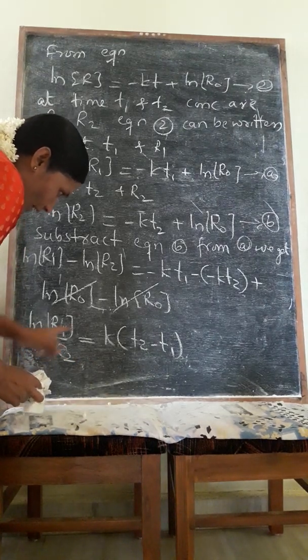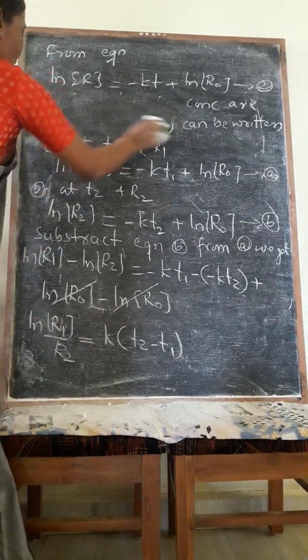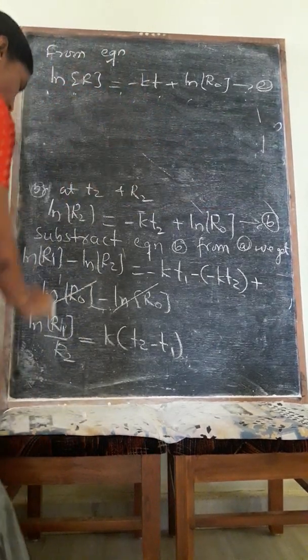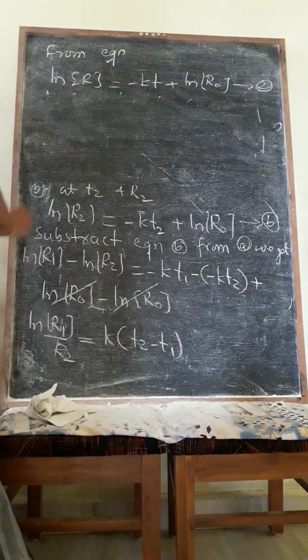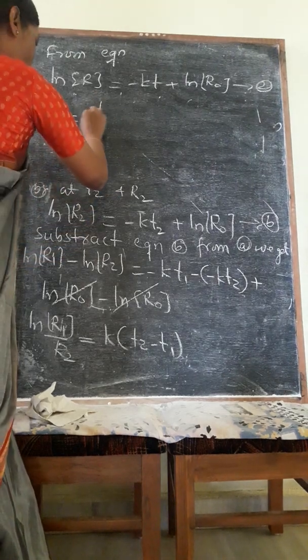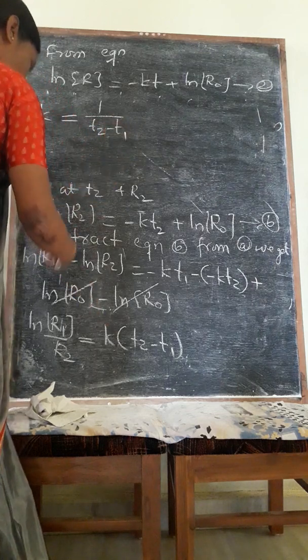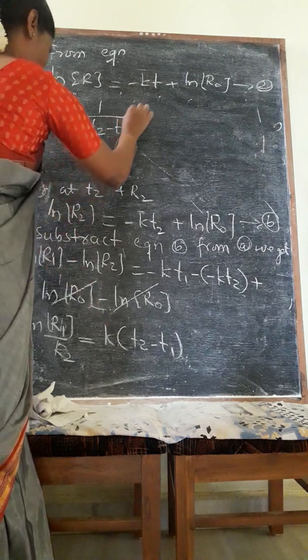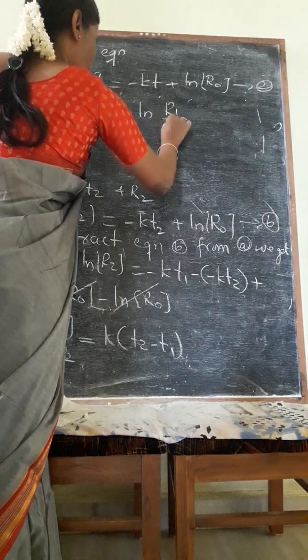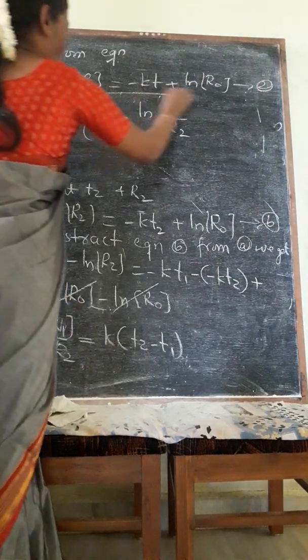I will rearrange this equation in another type. That equation is k equals 1 divided by T2 minus T1, ln R1 minus ln R2.